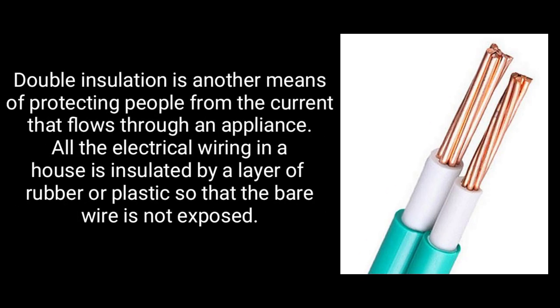Double insulation. Double insulation is another means of protecting people from the current that flows through an appliance. All the electrical wiring in a house is insulated by a layer of rubber or plastic so that the bare wire is not exposed.